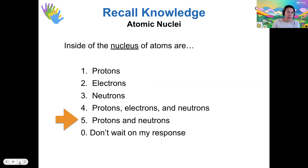And I'm going to skip this one. So but I'll tell you, inside the nucleus of atoms there are protons and neutrons, electrons orbit around the nuclei.